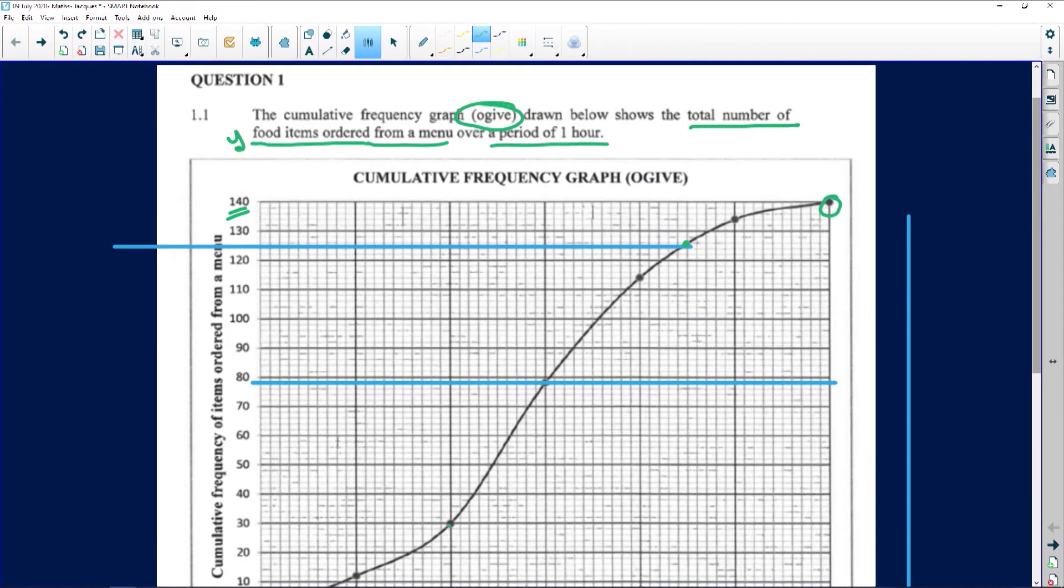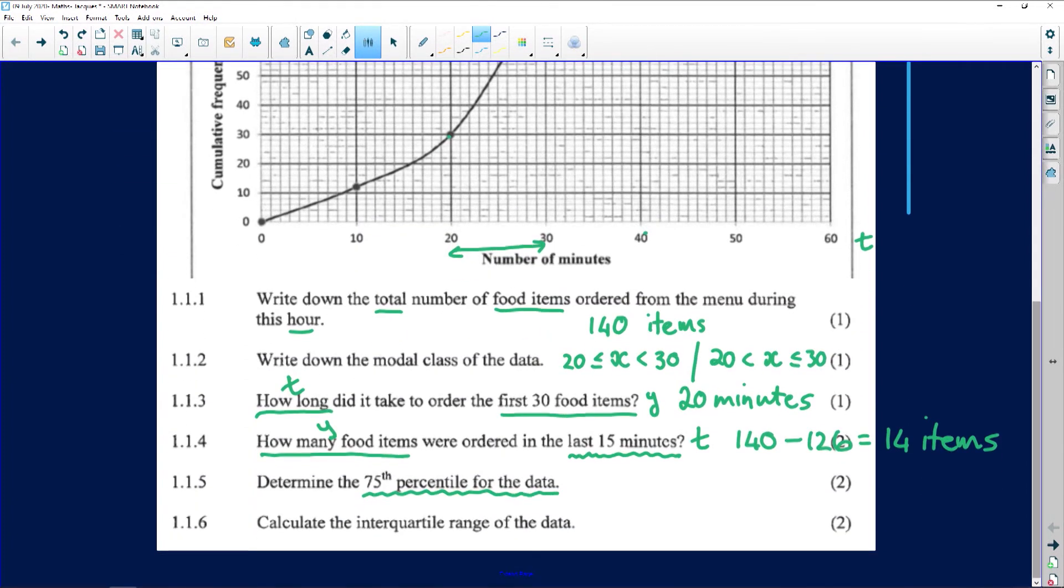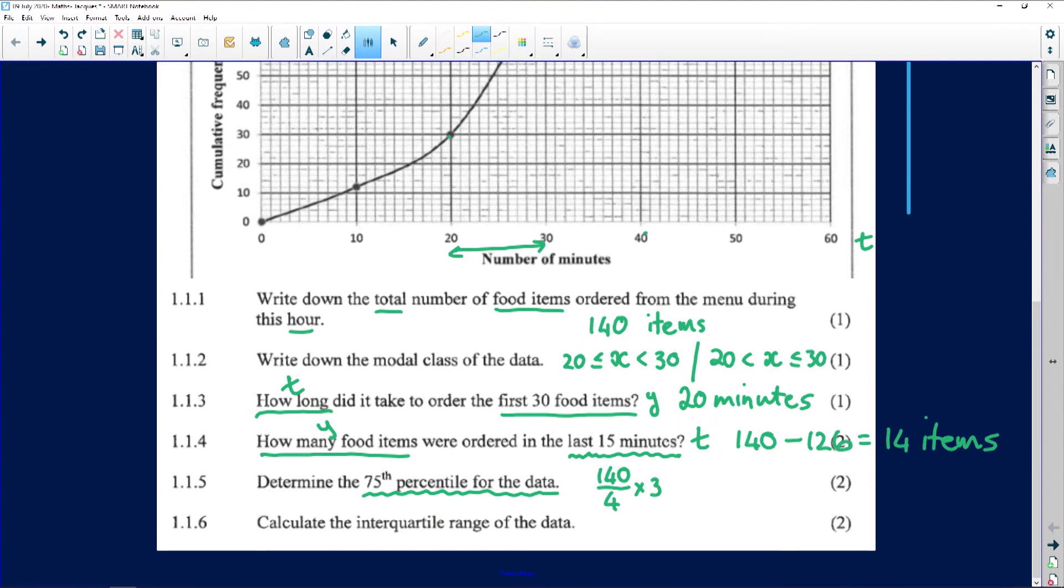Now folks, the 75th percentile is the third quartile. It represents three quarters of the data. So they want to know where is the 75th percentile. Now if we look at the total amount that we have, the total is 140. So to find out where one of the percentiles lie, I remember they quartiles. So I divide it by four. Then I have the first 25% of the data. If I multiply that with three, I have 75% of the data. So I'm then at quartile three or the 75th percentile.